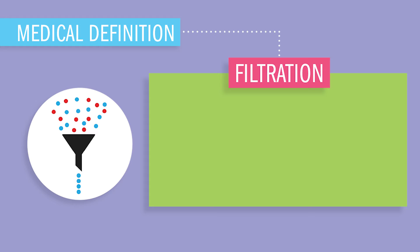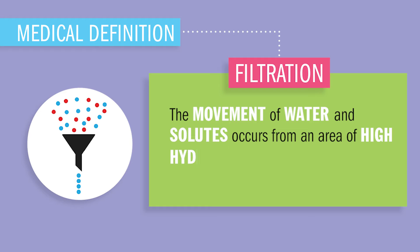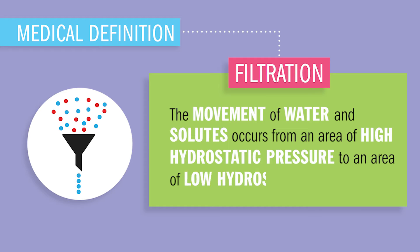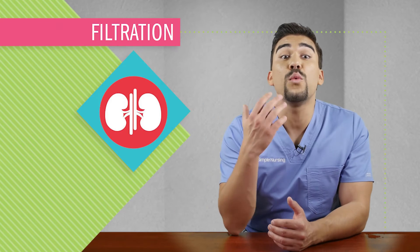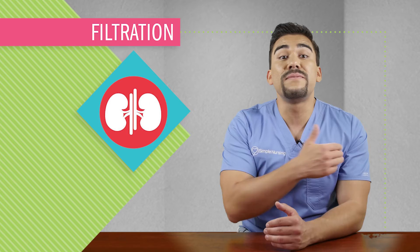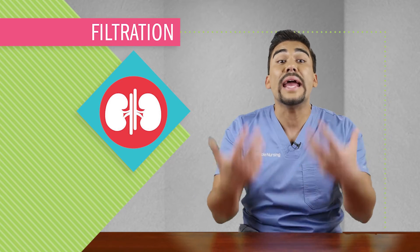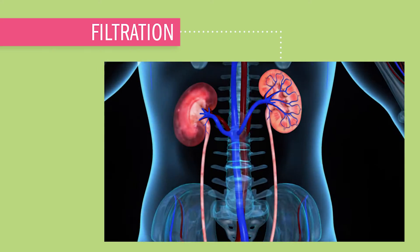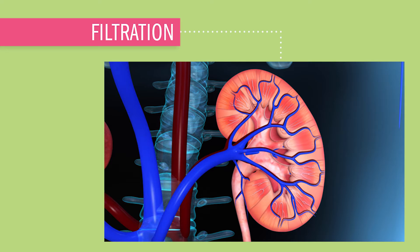Next term is filtration. Basically, the movement of water and solutes occurs from an area of high hydrostatic pressure — key word here — to an area of low hydrostatic pressure. The best example of this would be in the kidneys, basically the washing machines of the body, that filter approximately 180 liters of plasma per day. Filtration is simply a passage of water and electrolytes through the arterial capillary bed into the interstitial fluid.